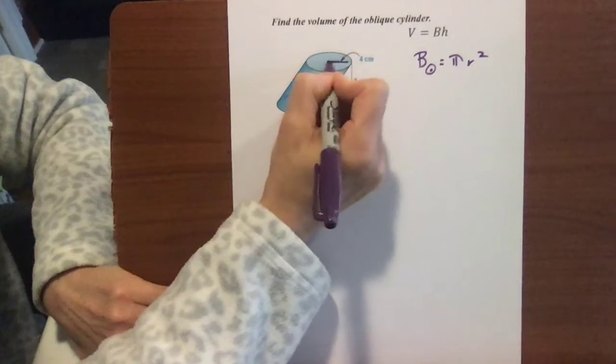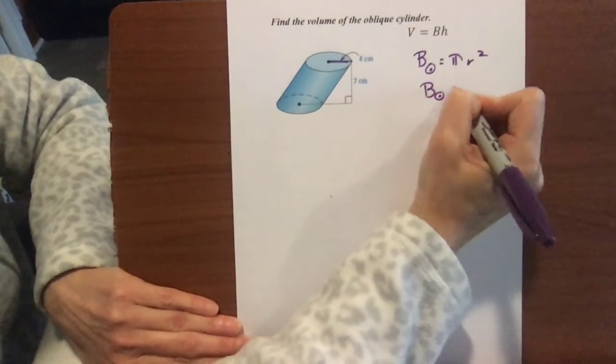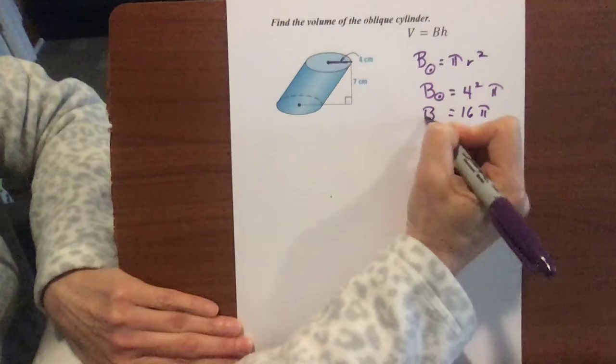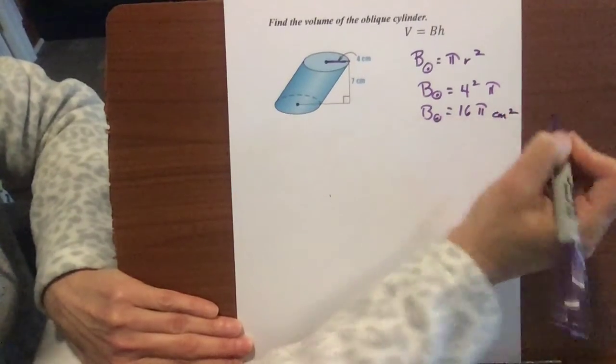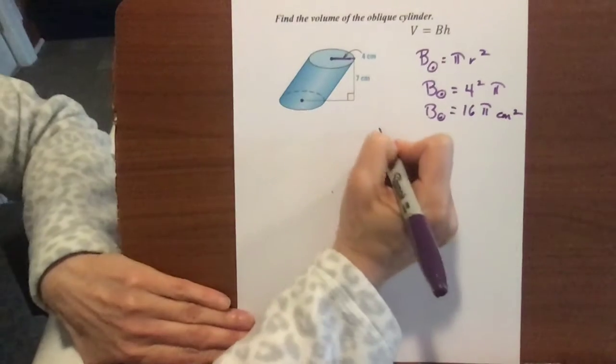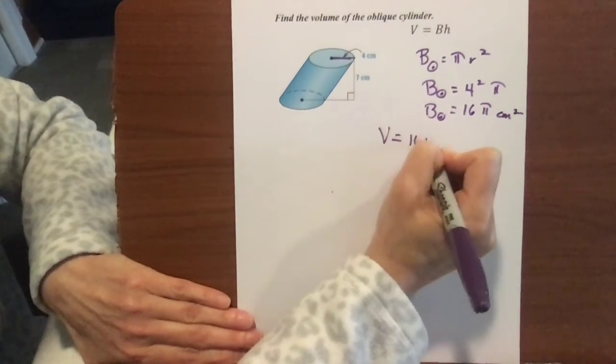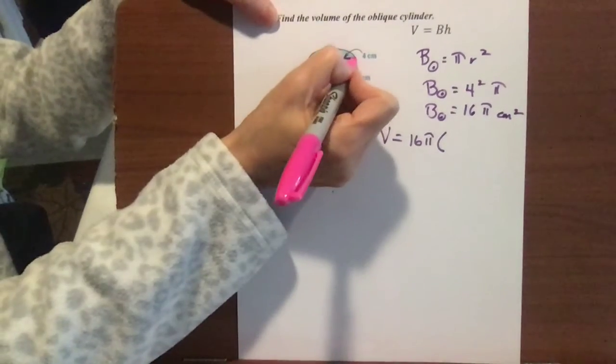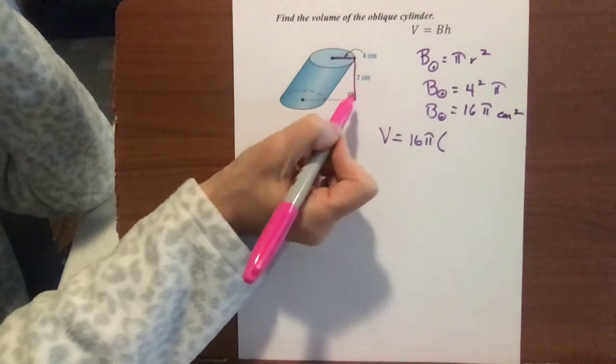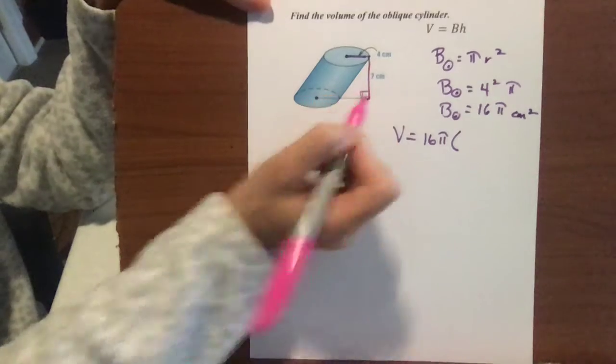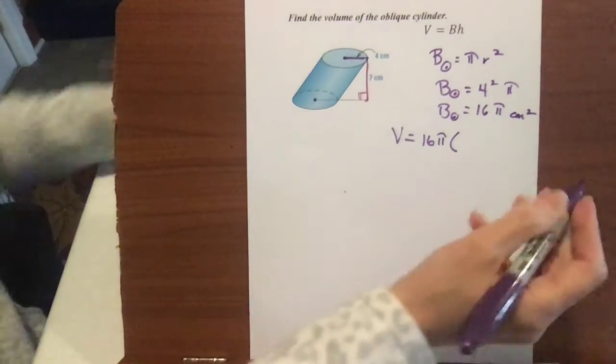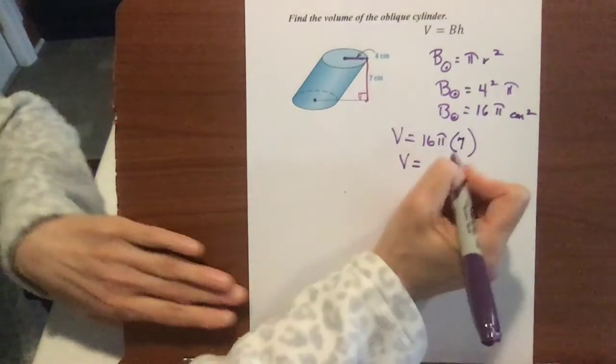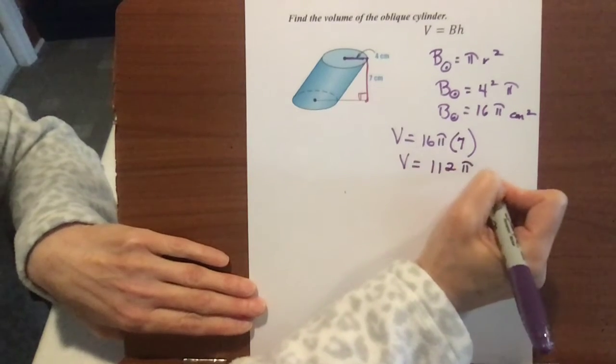Our radius is 4. So our base area is going to be 4 squared times pi, so 16 pi, and that's centimeters squared. Our volume is going to be our base area, 16 pi, times our height. And our height is denoted here. It's outside so that we can see it clearly, but it's the perpendicular distance from one base to the other, and there's your right angle. So that's going to be times 7.